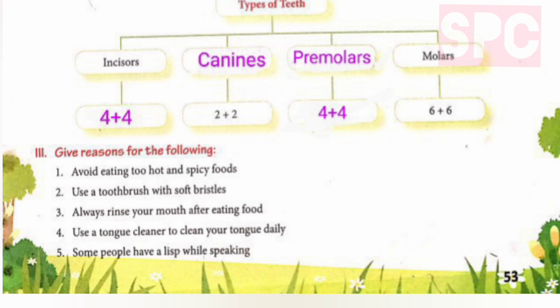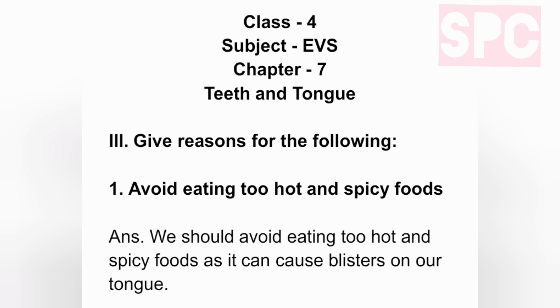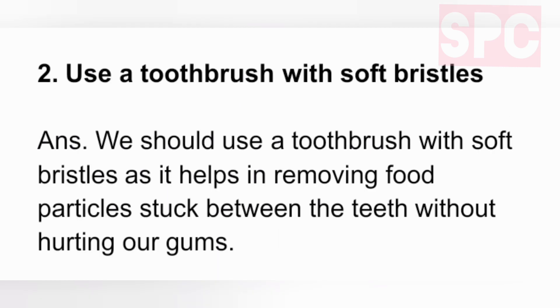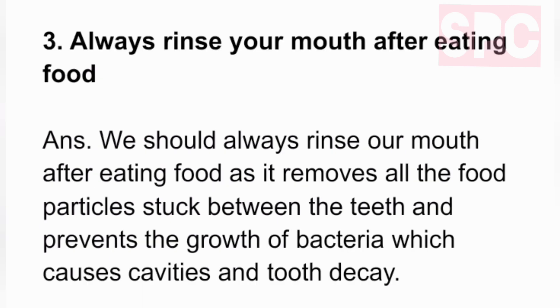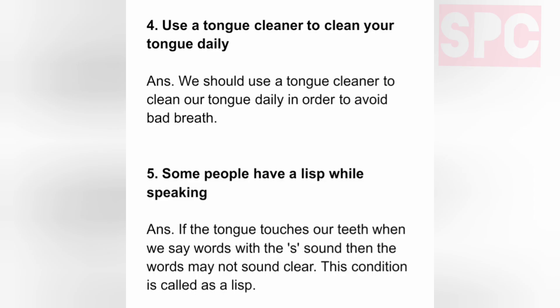Question 3 — Give reasons. (1) Avoid eating too hot or spicy food — it can cause blisters on the tongue. (2) Use a toothbrush with soft bristles — it removes food particles without hurting gums. (3) Always rinse your mouth after eating — it removes food particles and prevents bacterial growth causing cavities. (4) Use a tongue cleaner daily — to avoid bad breath. (5) Some people have a lisp — because the tongue touches the teeth when saying words with 's' sound, making them unclear.